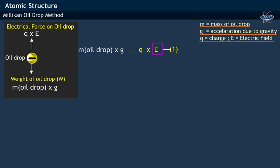By moving E term to the other side of the equation, we get charge on oil droplet, q, equivalent to mg divided by E.